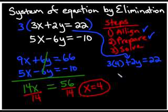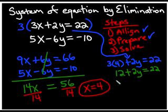That's going to become 12 plus 2y is equal to 22. We subtract 12 from both sides. And we get what? 2y is equal to 10.